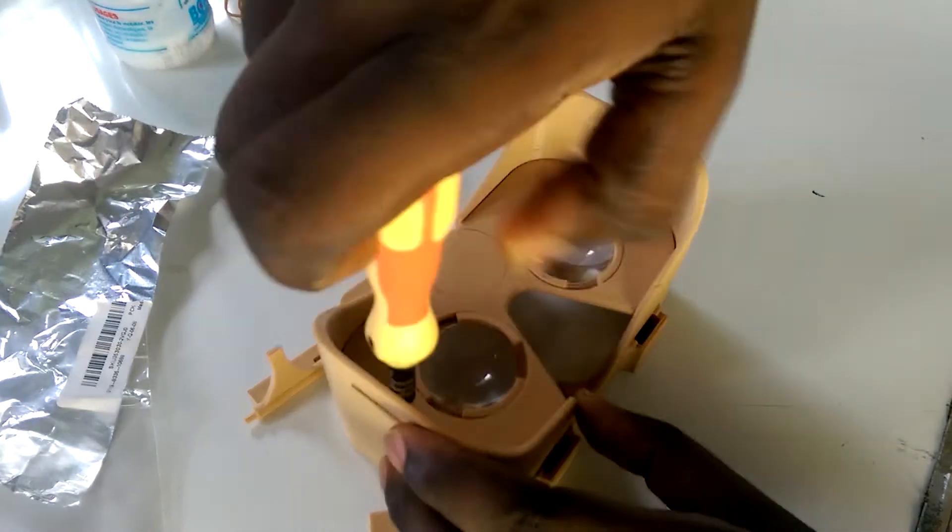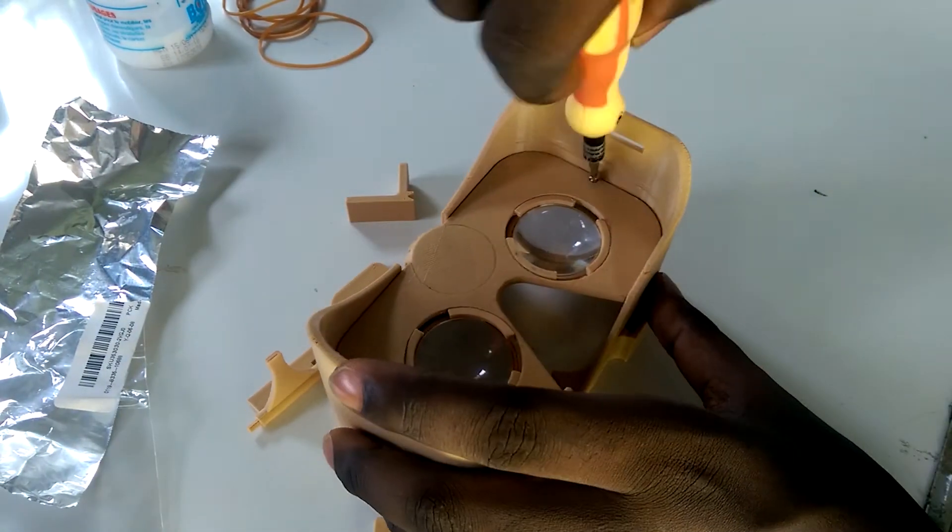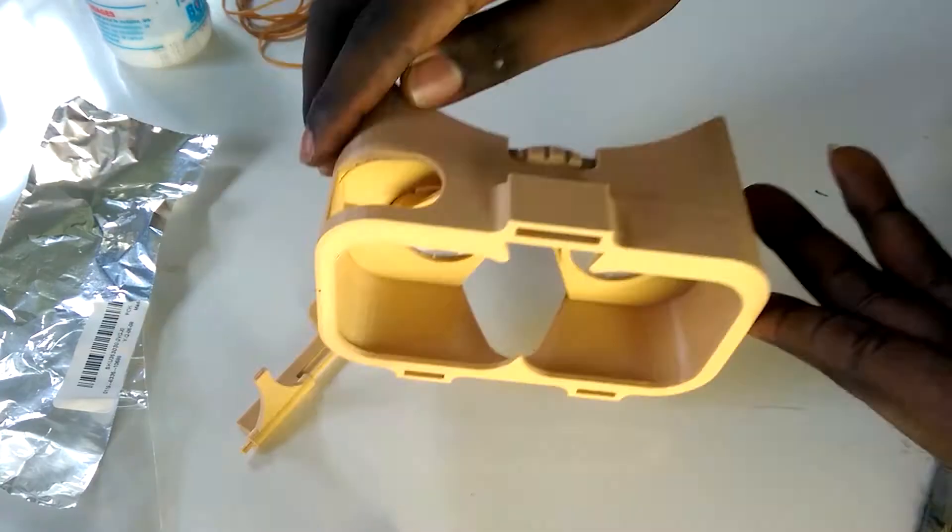Attach the middle piece to the main body and secure it with the screws. Once that's done, proceed to wrapping the clicker with thin foil.